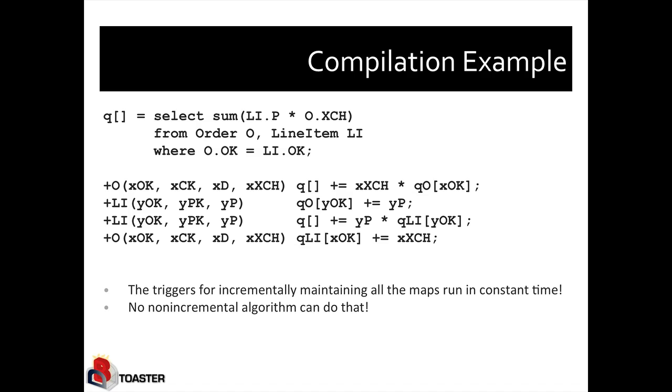We have applied recursion here because we have used two levels of recursion and have produced auxiliary views, QO and QLI, which are also incrementally maintained. Now, if you use classical incremental view maintenance, which would have stopped at the first delta computation, we would also have gained a performance improvement compared to naive re-evaluation. But our update triggers would be linear time, they would not be constant time.